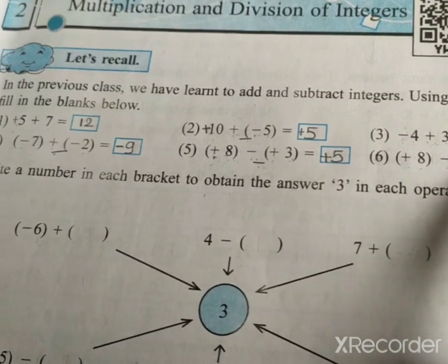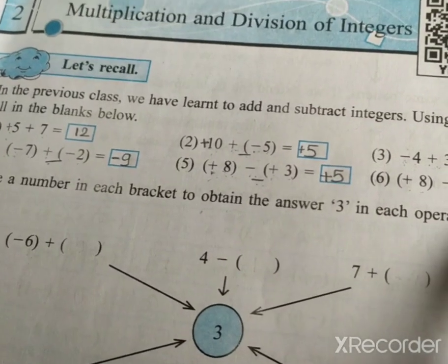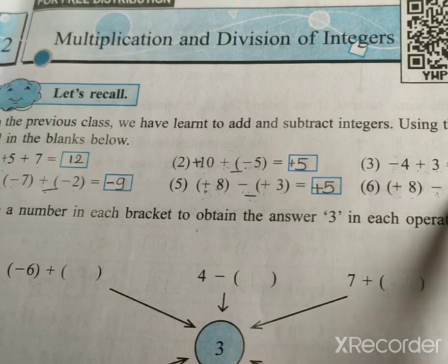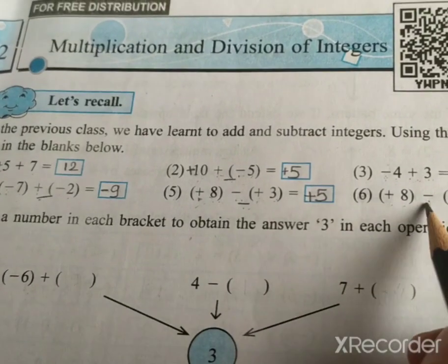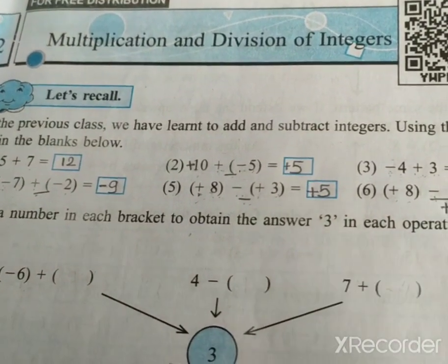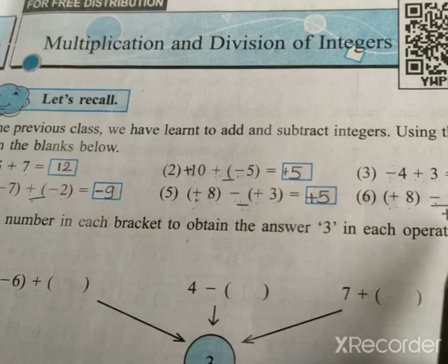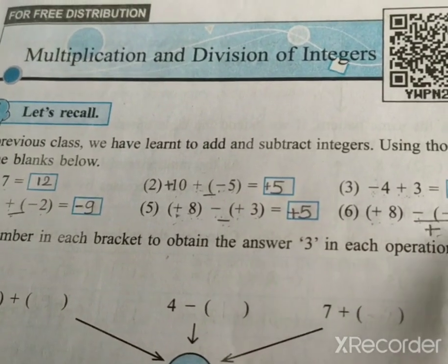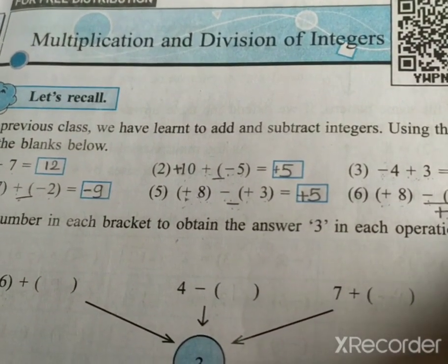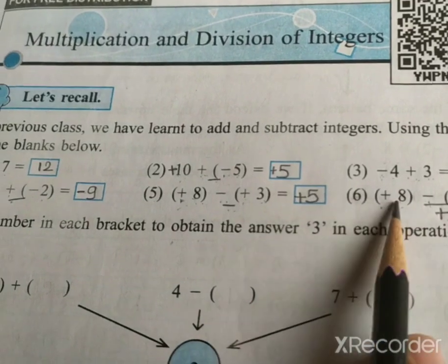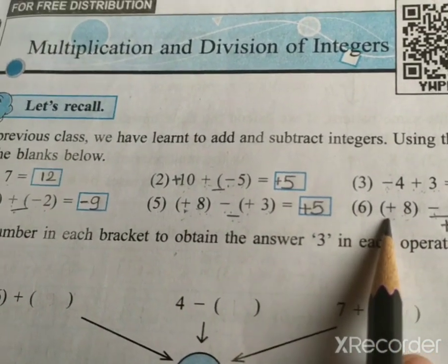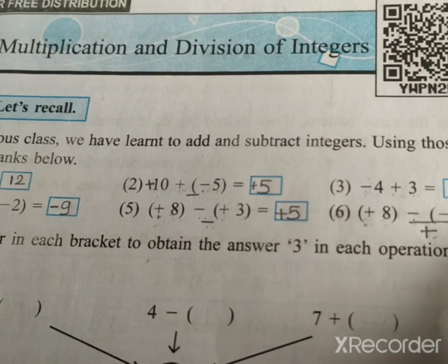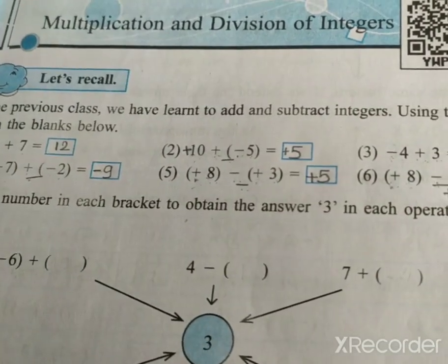Next: plus 8 minus, in bracket, minus 3. Plus and minus gives minus, then minus and minus gives positive. So plus 8 plus 3 equals 8 plus 3, which is 11. The bigger number is positive, and the symbol of 8 is positive. Therefore, our answer is positive 11.